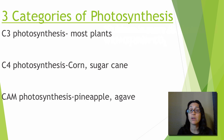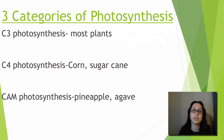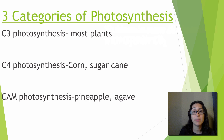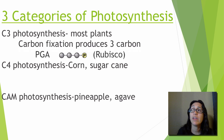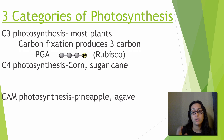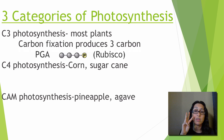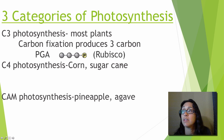There are three categories of plants based on how they do photosynthesis. First, C3 plants — most plants fall into this category. They perform the normal Calvin cycle you've been taught: carbon fixation produces PGA, a three-carbon product, using the Rubisco enzyme.